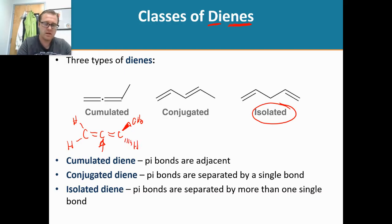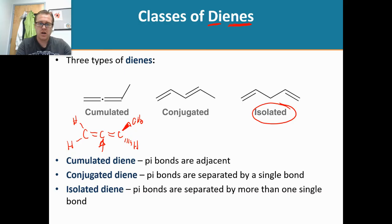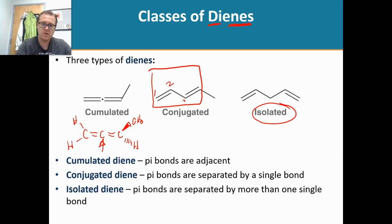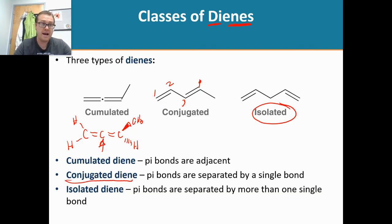A conjugated diene, which we've seen before in previous videos, simply has a double-single-double pattern. Pay close attention — the conjugated part of this alkene is right there, and we label those carbons one, two, three, four. We're not going to worry about the fifth carbon because it's not part of that conjugated pi system. In an isolated diene, you see the pattern double-single-single-double — that is not conjugated.